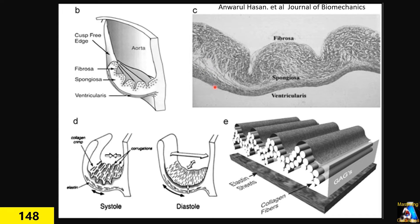As you know, atrioventricular valves — mitral and tricuspid — their function depends not only on their own structure but also on the chordae tendineae and the papillary muscle. But the aortic and pulmonary valves don't have those structures. They don't have chordae tendineae. The function and histology of the cusp alone make those valves work correctly and prevent regurgitation.